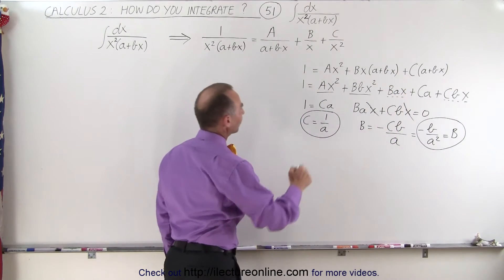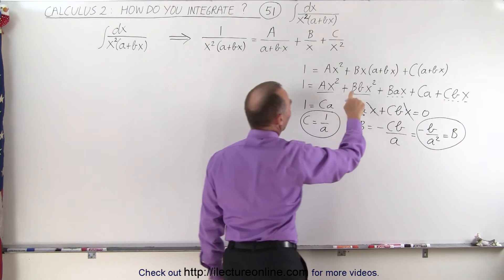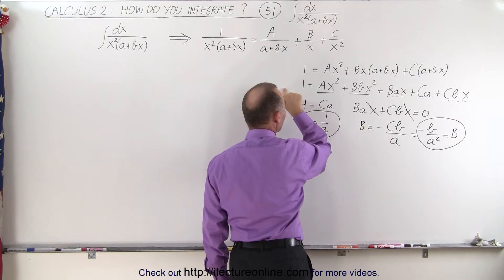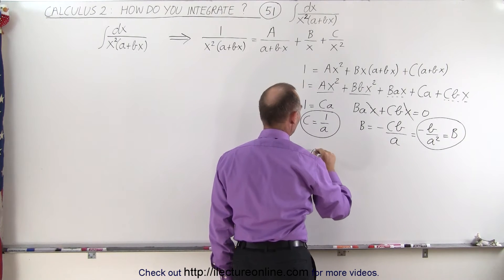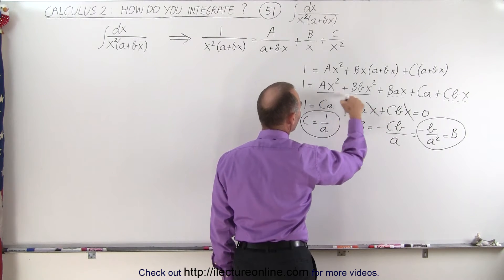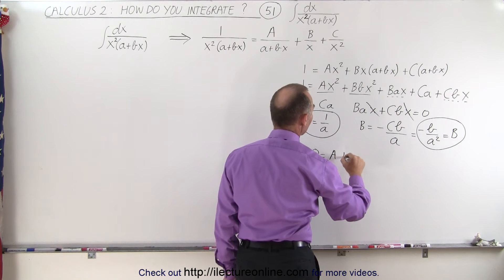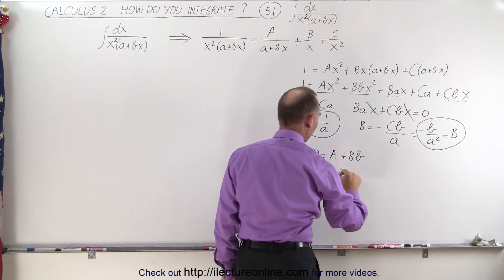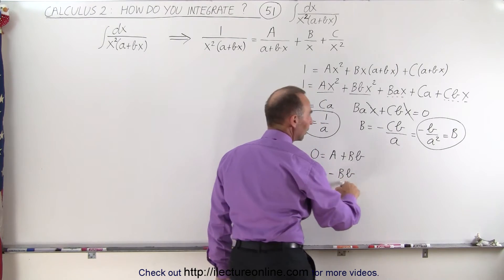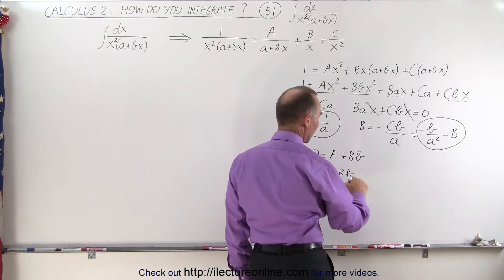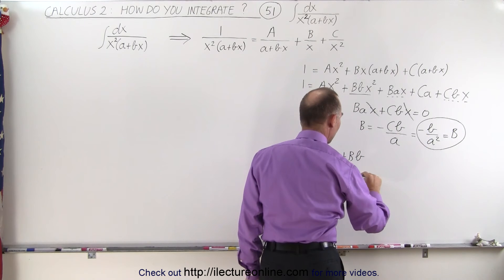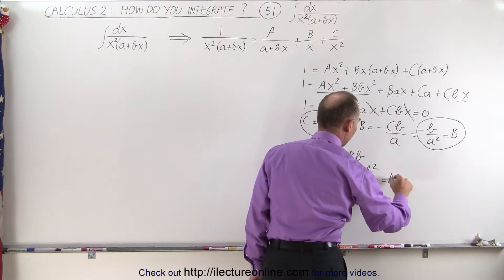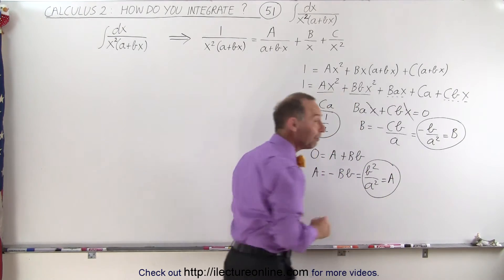Now we go for the third constant, A. We have two x squared terms on the right and no x squared term on the left, so we set 0 equal to the sum of the coefficients: A plus big B times b equals 0, which means A equals minus big B times b. Since B equals minus b over a squared, multiplying by negative b gives A equals b squared over a squared.